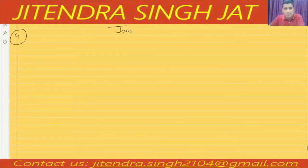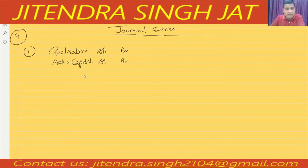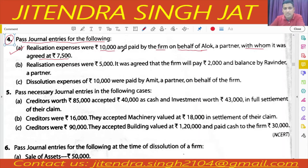So the first journal entry: Realization Account is debited and Alok's Capital Account is debited, and the credit goes to Bank — because the bank paid ₹10,000. In the question, realization expenses were ₹10,000 paid by the firm on behalf of Alok, but it was agreed only ₹7,500. So the firm paid ₹2,500 extra.